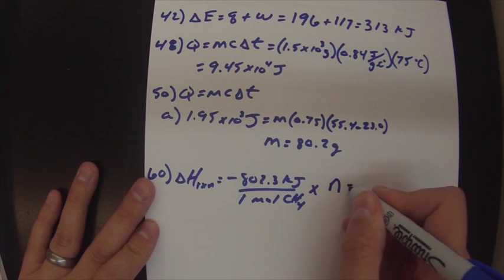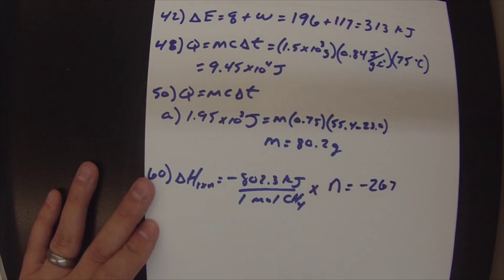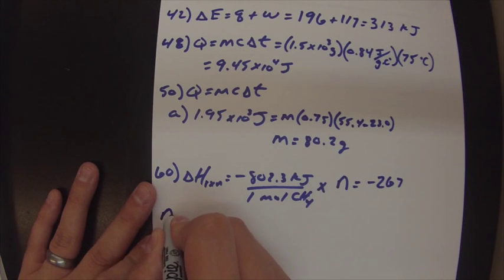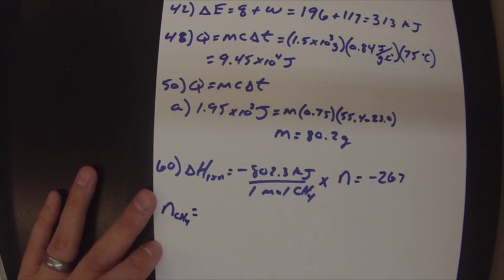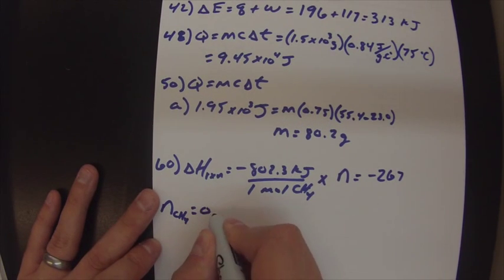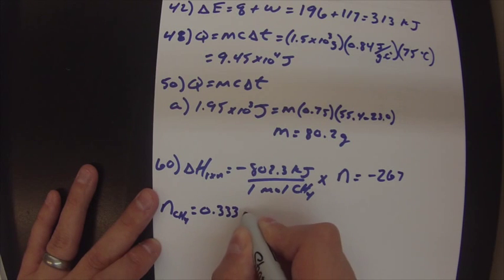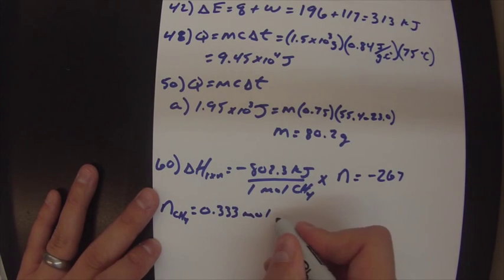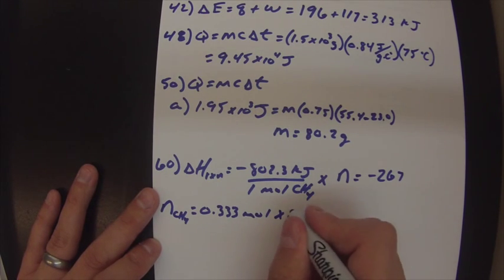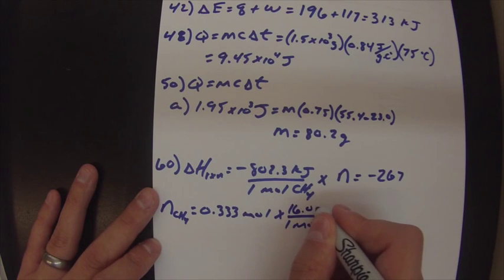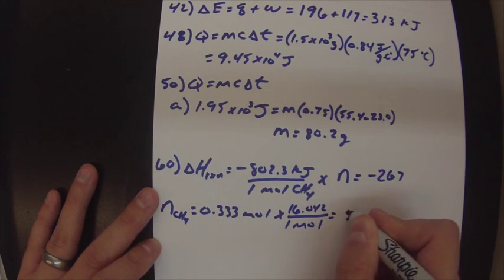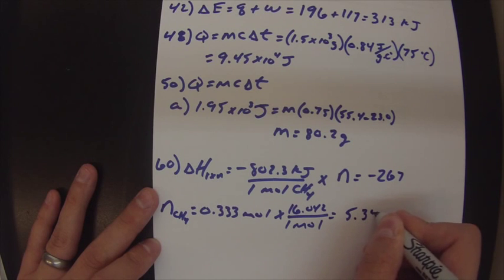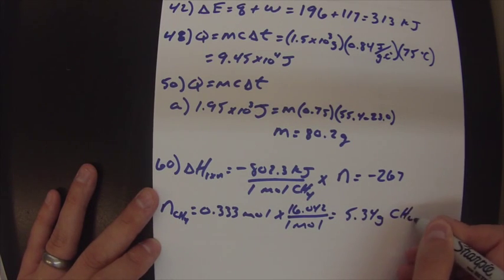So how I did this is I just said all right, times you know what number of moles, some number of moles will give me negative 267. And when you do that and you solve it out you get that your moles of methane equals a third. And then the last thing we need to do is just turn that to grams. So one mole has a mass of about 16.042, so that gives you a mass of 5.34 grams of methane.